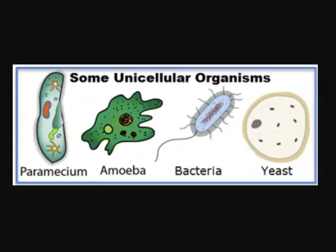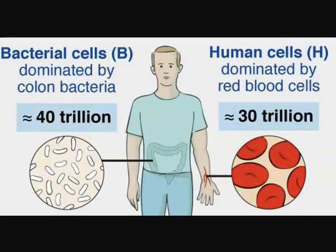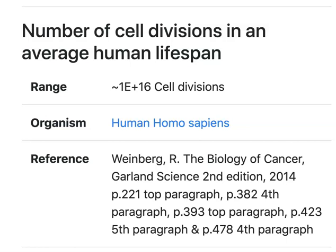The continuity of life is based on this unique ability to reproduce cells, called cell division. In unicellular organisms such as bacteria and amoeba, division of one cell reproduces the entire organism. In multicellular organisms, thousands to trillions of cell divisions occur within the span of life. For humans, there are approximately 3 × 10^13 cells in the body — that's 30 trillion cells — and 10^16 cell divisions in an average lifetime, which is 10 quadrillion cell divisions. Each individual cell can only divide 50 to 70 times before it dies.